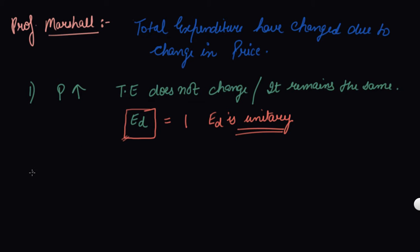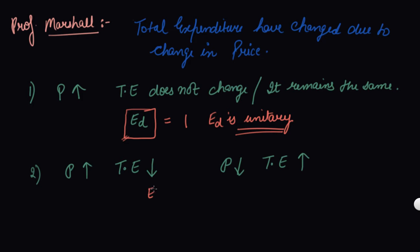The second case: if there is a fall in the price of a commodity and total expenditure increases, or with a rise in price total expenditure decreases — meaning price and total expenditure move in opposite directions — then your elasticity of demand is greater than unitary, that is, Ed is greater than 1.